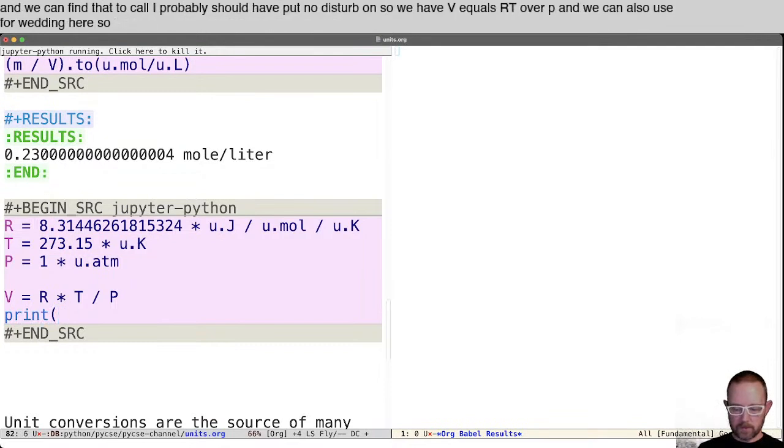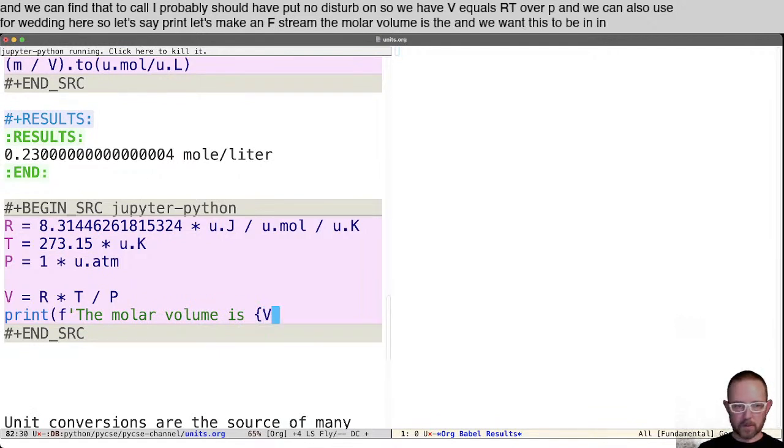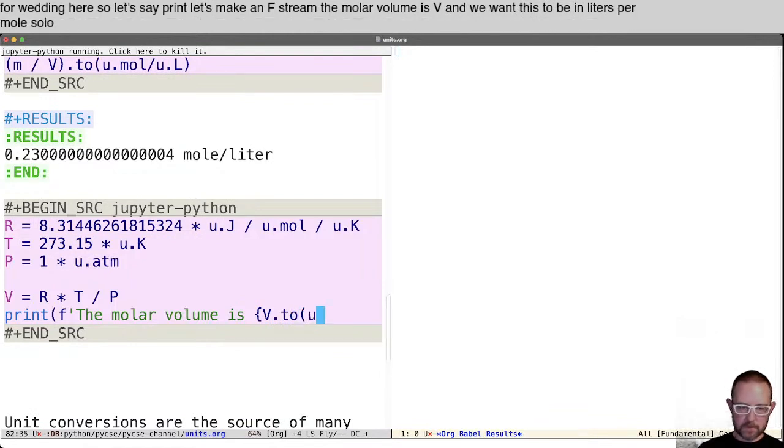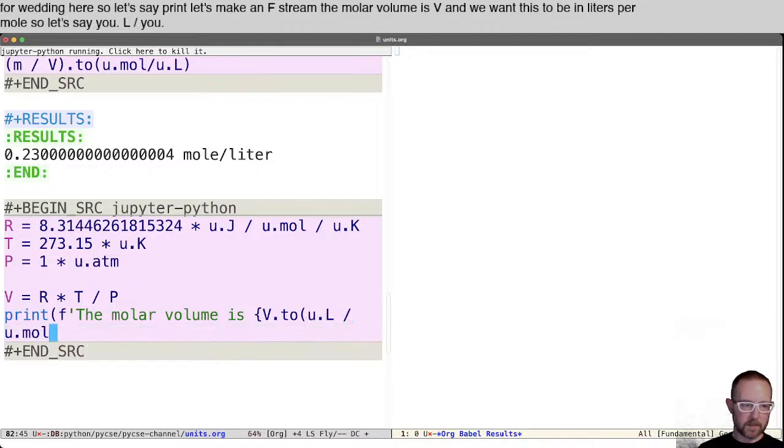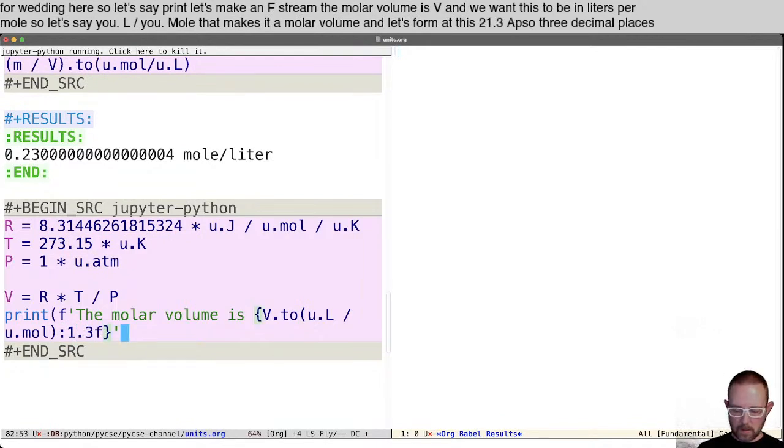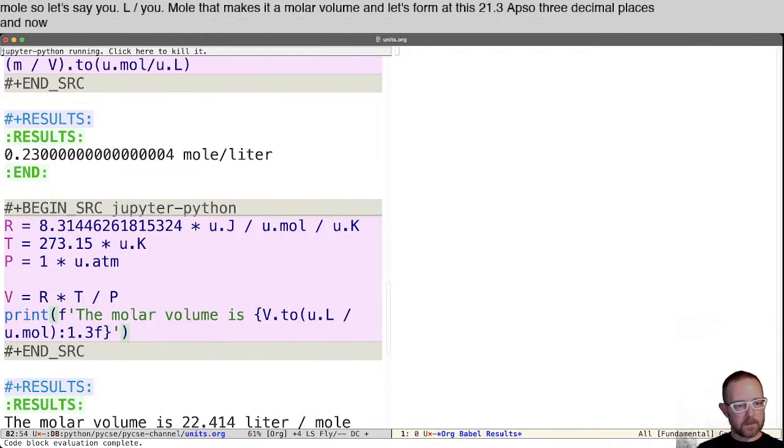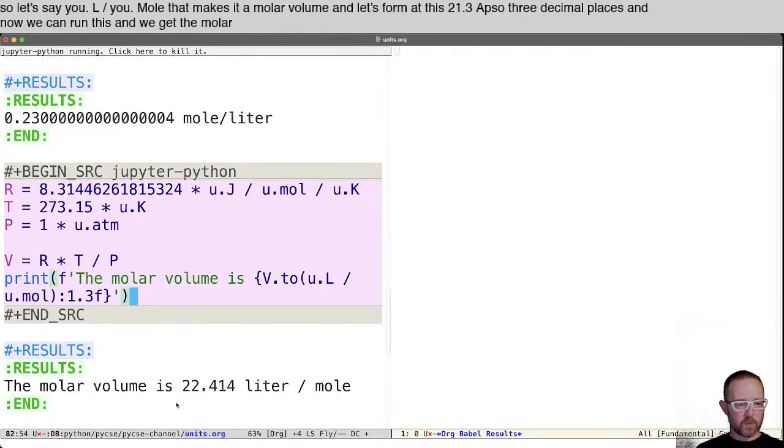So let's say print, let's make an F string. The molar volume is V. And we want this to be in liters per mole. So let's say U dot liters divided by U dot mole. That makes it a molar volume. And let's format this to 1.3 F. So three decimal places. And now we can run this, and we get the molar volume is 22.414 liters per mole. As you might recall from physical chemistry.